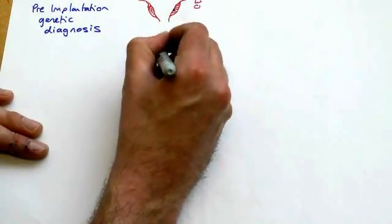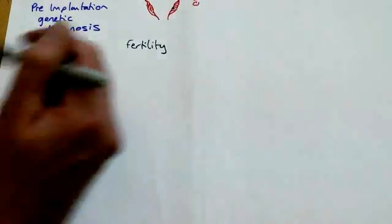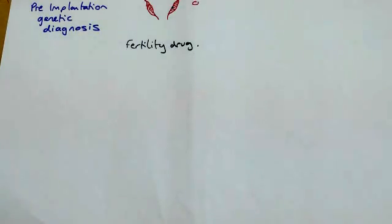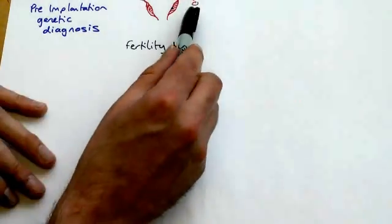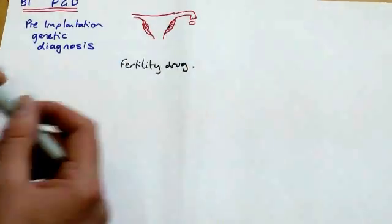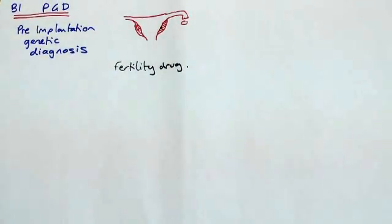The first step is that the mother would be given a fertility drug. Now normally we would expect only one egg to be released once a month by the mother. So one month one ovary would release an egg, the next month the other ovary would release the egg and so on. Occasionally of course more than one egg is released in the case of non-identical twins.